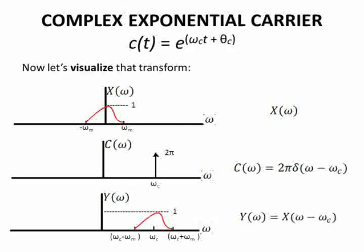The convolution of these two via the sifting property yields Y(ω), where Y(ω) = X(ω - ω_c). Notice that Y(ω) is simply X(ω) shifted to ω_c with the same amplitude of 1.